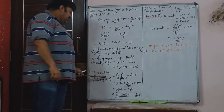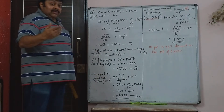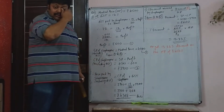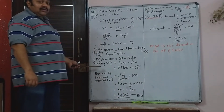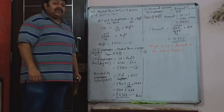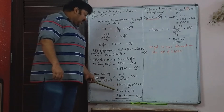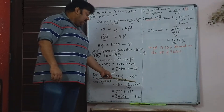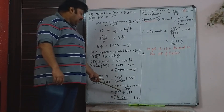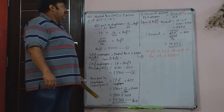Price paid by shopkeeper including GST: cost price was Rs. 3,900, and 12% of Rs. 3,900 is the GST he pays, which is Rs. 468. So he pays Rs. 3,900 plus Rs. 468, that is Rs. 4,368 — that is the price paid by the shopkeeper including GST.